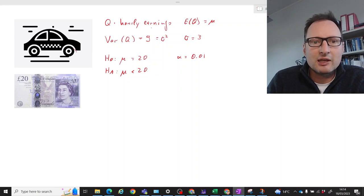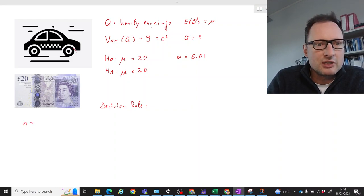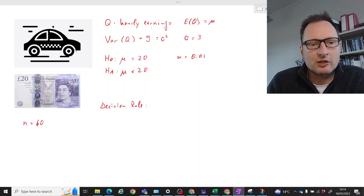So let's think about the decision rule. Before we actually think about the decision rule we will need to think about the test statistic and its distribution. So what we will do is we will have a sample of 60 drivers.